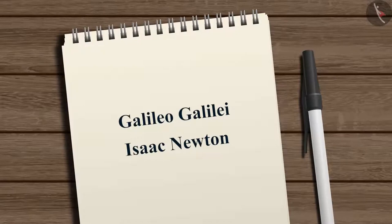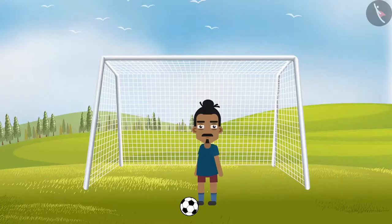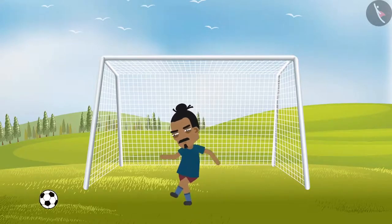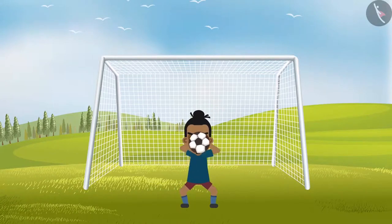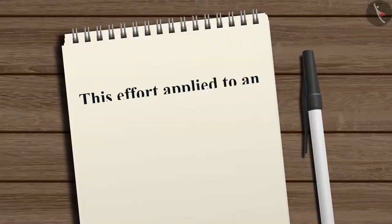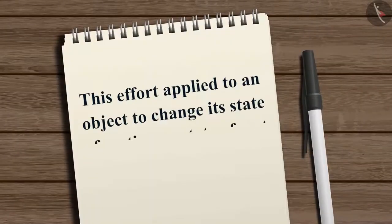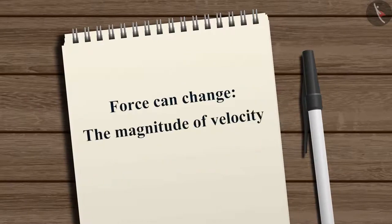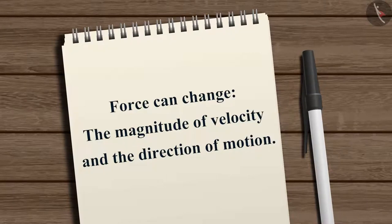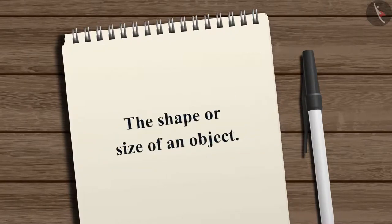We have observed that to move an object at rest, or to stop a moving object, we need to put in some effort. This effort applied to an object to change its state of motion or state of rest is an example of force. Force can change the magnitude of velocity and the direction of motion. It can also change the shape or size of an object.